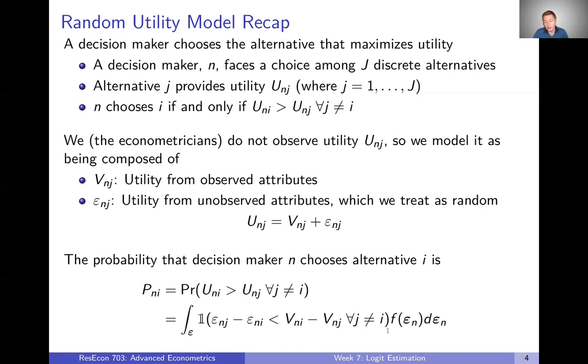And importantly, we're going to have to make some assumptions about this term right here. This is the joint density of all of the epsilon draws for a given individual. So how are all of those unobserved utilities which we treat as random for an individual, how are all of those jointly distributed, we need to make an assumption or know something about that.